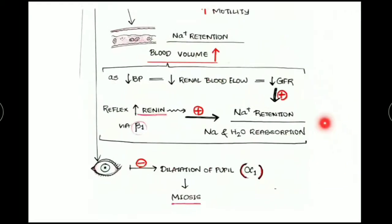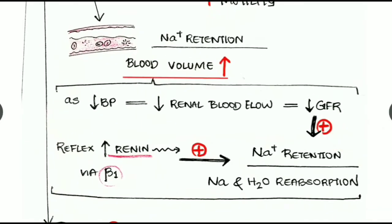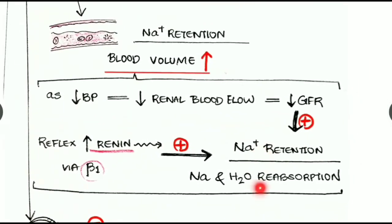Regarding hemodynamics, alpha blockers cause sodium retention and increased blood volume. With alpha blockade there is decreased blood pressure, causing reduced renal blood flow and resulting in reduced GFR — glomerular filtration rate. This reduced GFR stimulates sodium retention and sodium and water resorption.